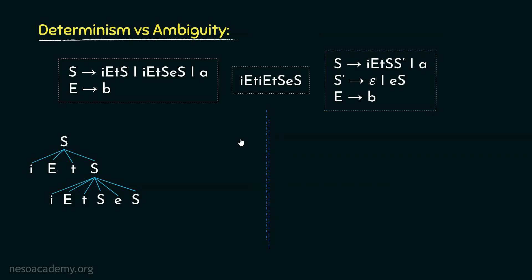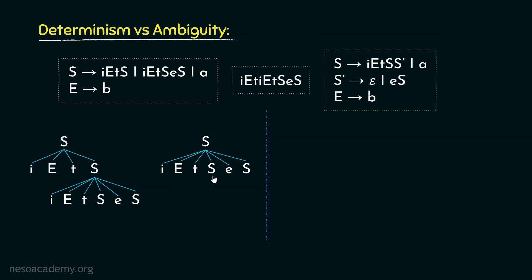Let's see if there is any other way. Starting from start symbol S, this time we first derive i, e, t, S, e, S — using the second production rule. Then from the inner S, we derive i, e, t, S using S → i e t S. The yield is again i, e, t, i, e, t, S, e, S. So the same string can be derived in two ways, meaning this version is ambiguous.